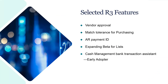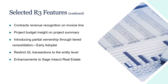Today we're going to be talking about the new vendor approval feature in AP, matching tolerance for purchasing, AR payment ID, expanding the beta list to other objects, cash management bank transaction assistant (which is in the early adopter stage), contracts revenue recognition on the invoice line item basis, project budget insight on the project summary screen, introducing partial ownership through tiered consolidation (still early adopter), restricting GL transactions to the entity level, and some enhancements to the Sage Intacct Real Estate module.